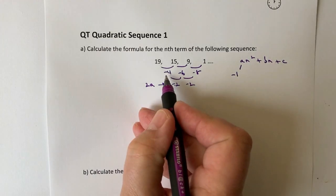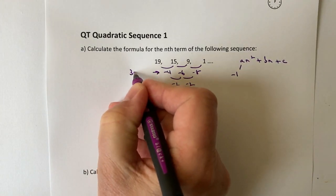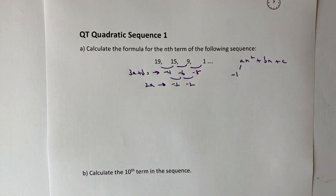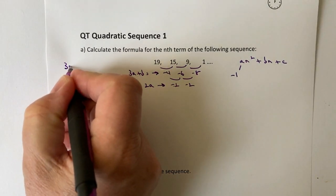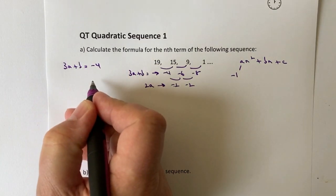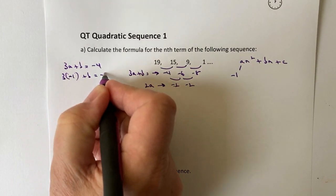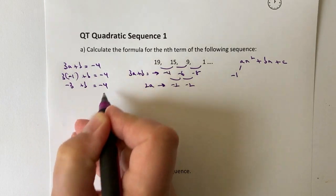The next bit of it is this minus 4. And what I say there is that 3a plus b equals minus 4. So now because I know the value of a, I can just plug that information into the formula, and I can calculate the value of b. So I've got 3a plus b equals minus 4. I know my value of a is 3 times minus 1 plus b equals minus 4. So that's going to be minus 3 plus b equals minus 4.